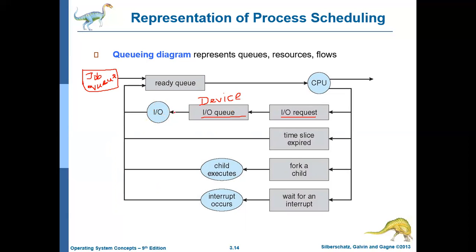When there are no more processes waiting for that particular IO device, the process will be given access to perform the IO operation. Once the IO operation is completed, it will again enter the ready queue. Similarly, for an executing process, if its time slice has expired, it will move directly back into the ready queue to wait for the next round of CPU allocation. This continues until the process has completely executed.